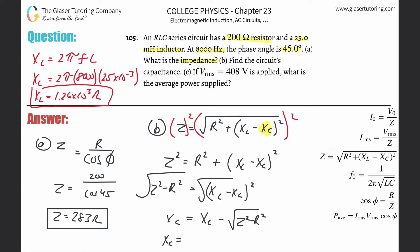Rearranging to isolate X_C, the reactive capacitance equals X_L minus √(Z² − R²). Plugging in: 1.26×10³ minus the square root of 283² minus 200² — using the exact value of 282.84 — gives a reactive capacitance of about 1057 ohms.